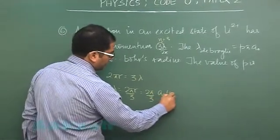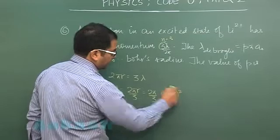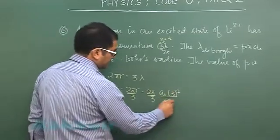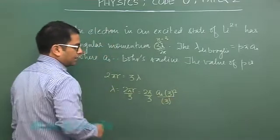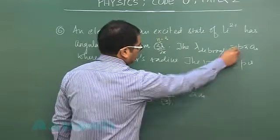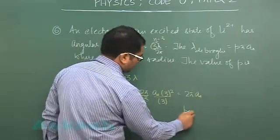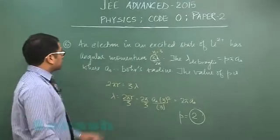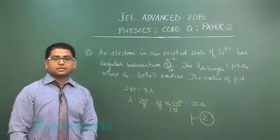and z again is 3. So this now comes out to be 2πa₀ and on comparison we would get the value of p as 2, and 2 would be the correct integer corresponding to question number six.